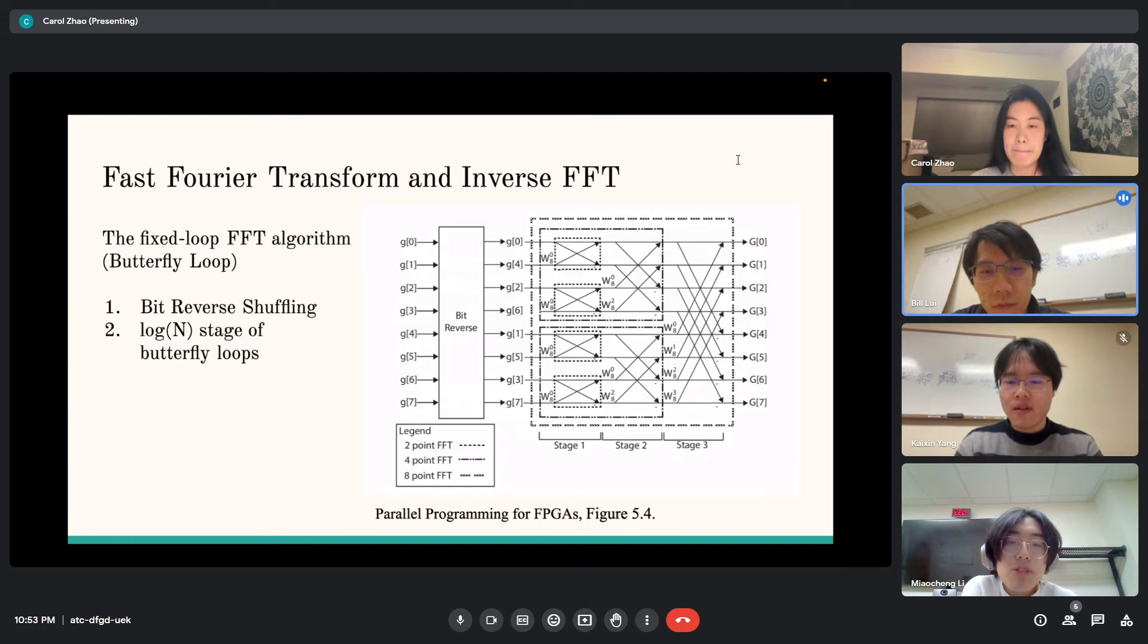Second, we have log N stages of butterfly loops. The input array can be partitioned into groups of size one, two, four, and so on, forming butterfly blocks. We take these blocks and compute elements by adding or subtracting two input elements at a stride of one, two, or four, where the lower half values are also multiplied by twiddle factors.